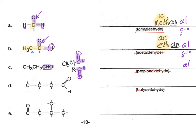Our ending will be -al. In front of that, we're going to put -an- to say that everything else is single bonded. Then we're going to put in the fact that there are three carbons on the main chain, so this is propanal. No number because the aldehyde will be number one.